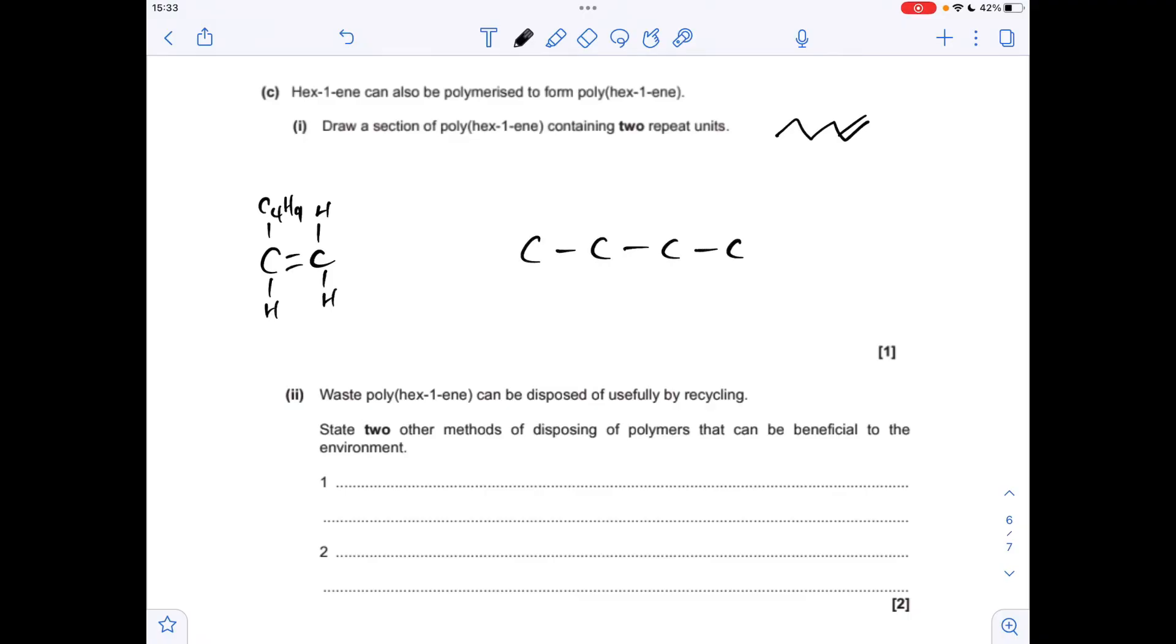Because we need two repeats, we need four carbons in a line. Put your end bonds on. Then all we need to do is put all of the atoms and groups back on. We've got this C4H9 group there, H's here and here, and then we repeat this. C4H9, H's, and the rest of the bonds. And that's it.